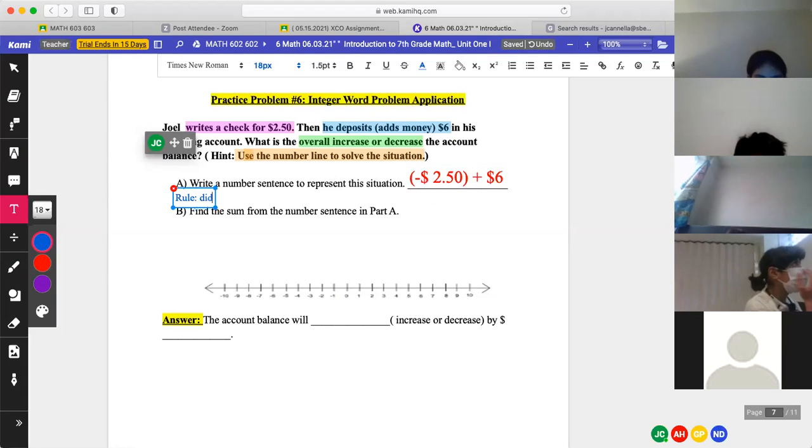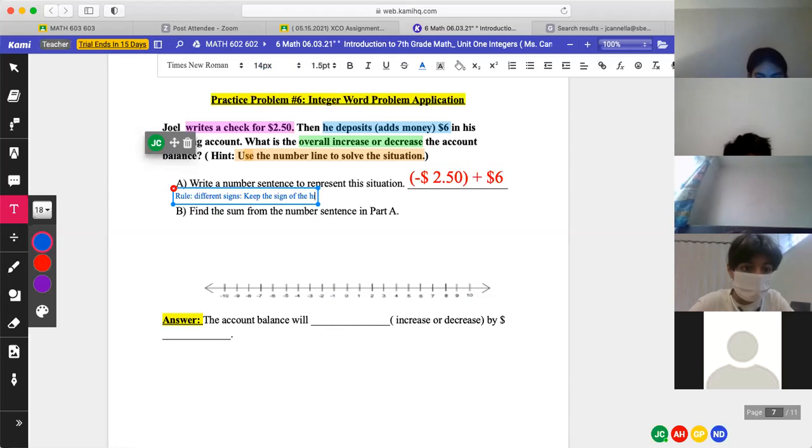So, we have negative $2.50 plus $6.00. You're going to subtract. The rule states when the signs are different, you keep the sign of the higher number and subtract. Nice job, David. Yes. Very good. So, let's write that down in our notes, bud. Ready? Keep up with me. Rule. Ready? Different. Different. Signs. Oops, not saying. Stop. Keep the sign of the higher number. You just said it, right? Yeah. And you said and subtract. Correct, David? Yes. Okay.